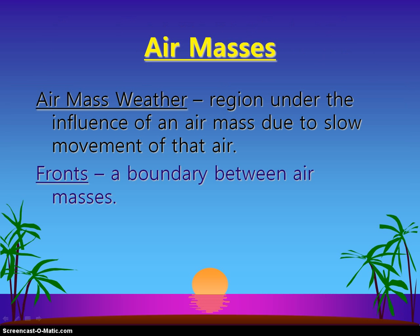Our weather is going to be determined by these air masses, and we're still talking about the troposphere. We have different air masses that move through the troposphere, and as they come in contact with each other — depending on the temperature and the amount of moisture they carry — they're going to create different types of fronts, these boundaries. Fronts are where our weather is going to form.